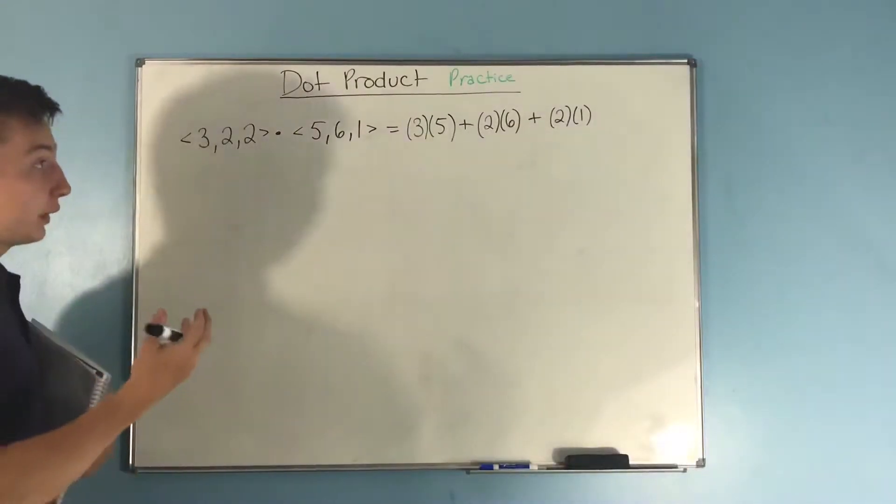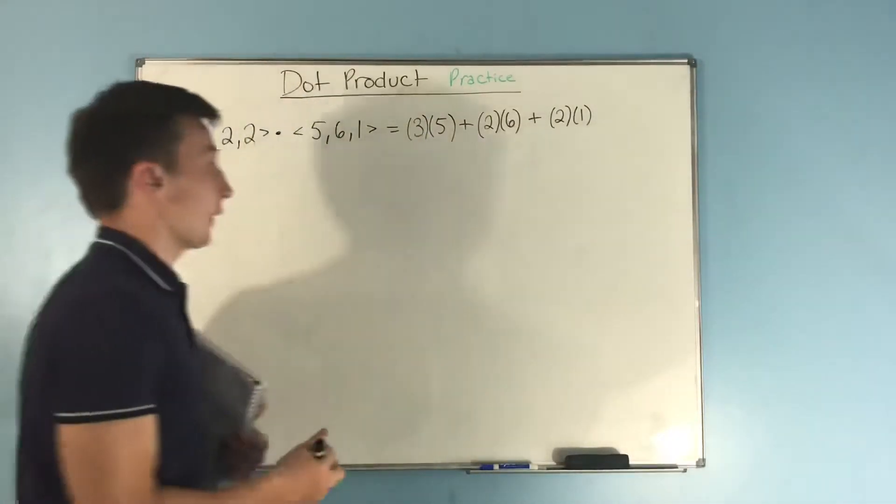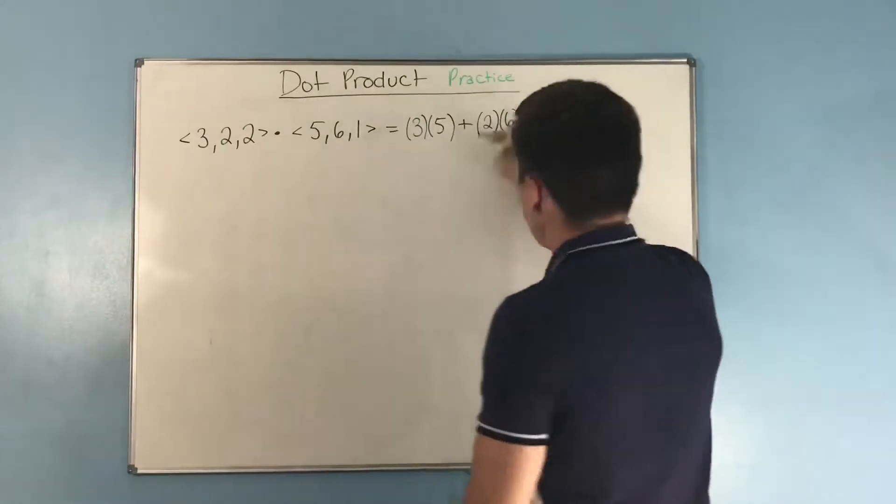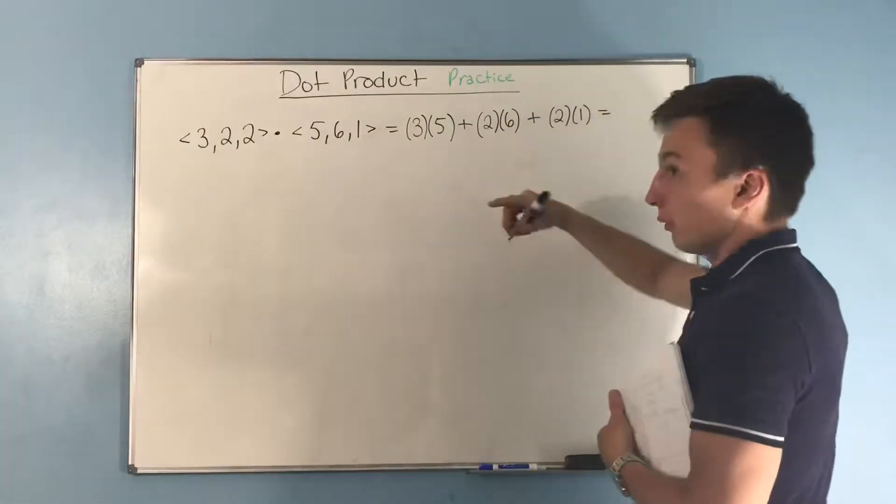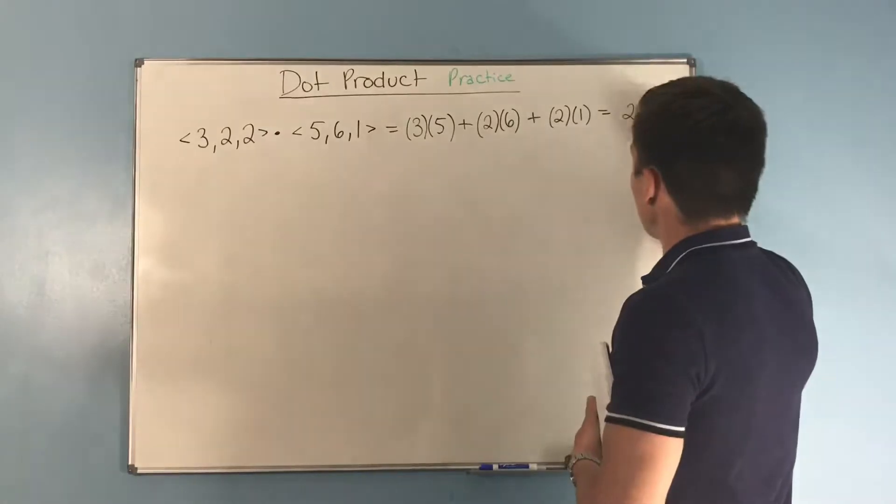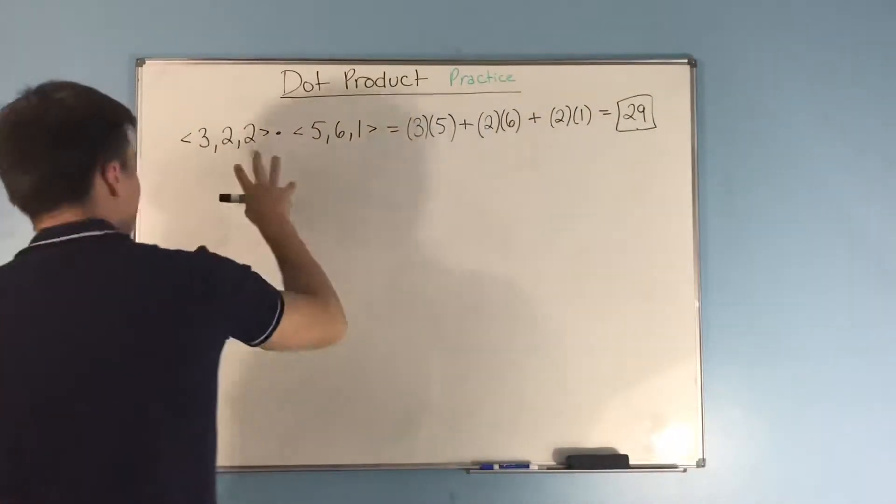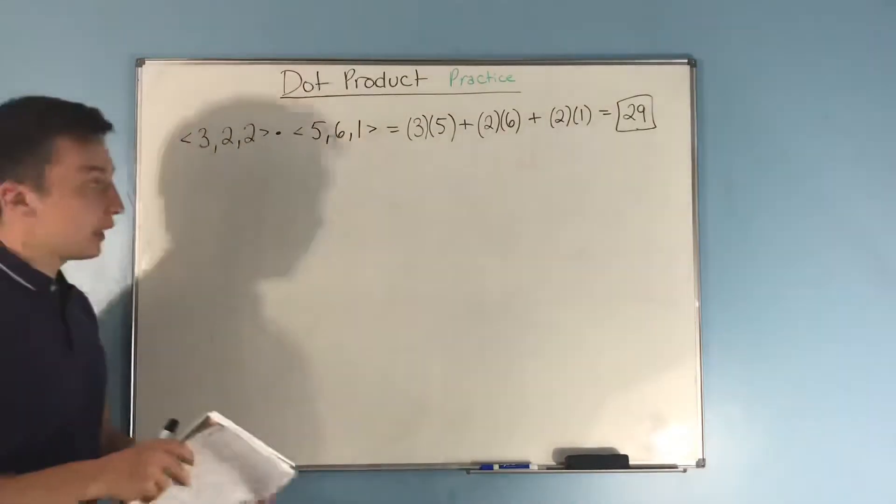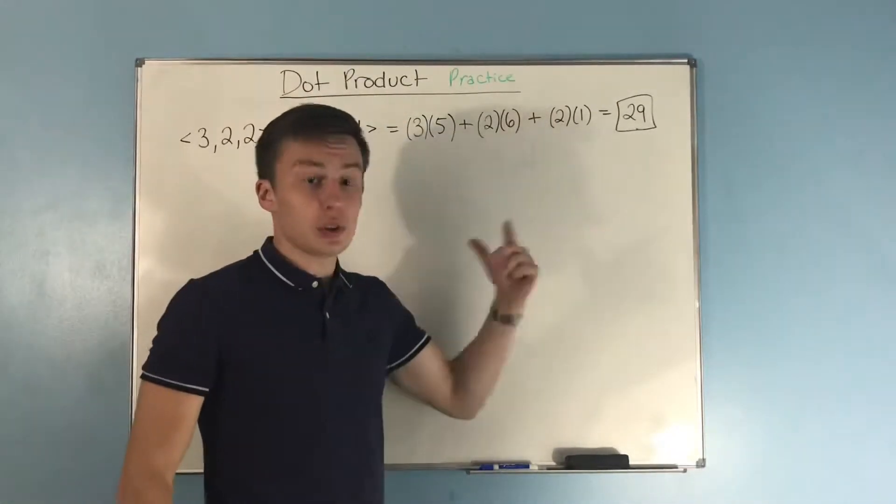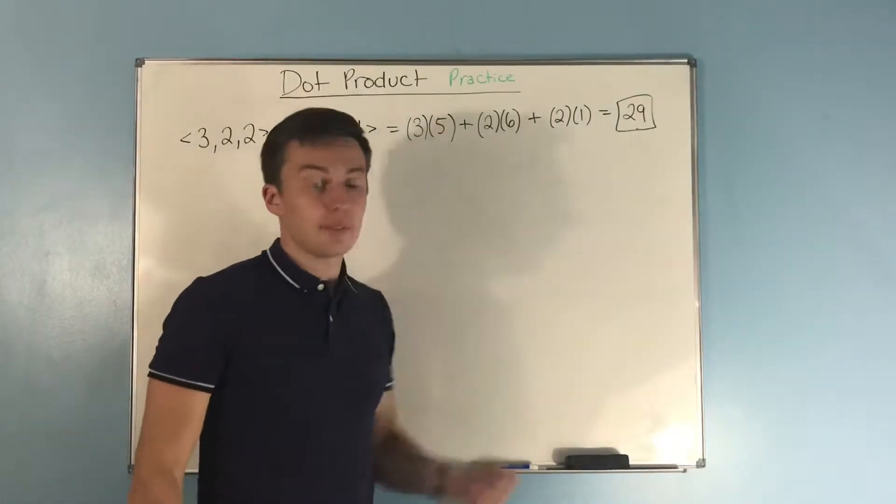Now, we're just going to simplify that a little bit. We have 15 plus 12 plus 2, and that gives us 29. Notice that we are multiplying two vectors together, but getting a scalar. And that's why this is also called a scalar product.